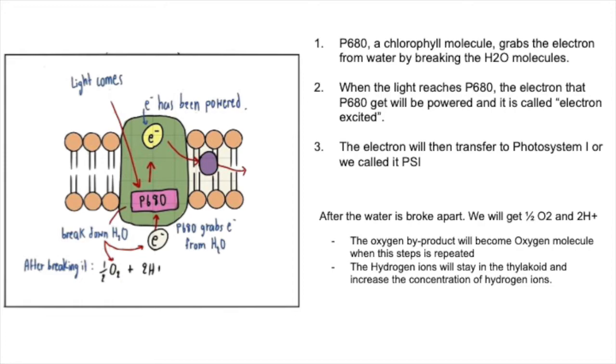We will get oxygen atoms as our byproduct in this process. The oxygen byproduct will become oxygen molecules when this step is repeated. And how about our H+? The H+ will stay inside the thylakoid and increase its concentration. Next, when the light reaches P680, the electron that P680 gets will be powered. And now, our electron will be in excited state.